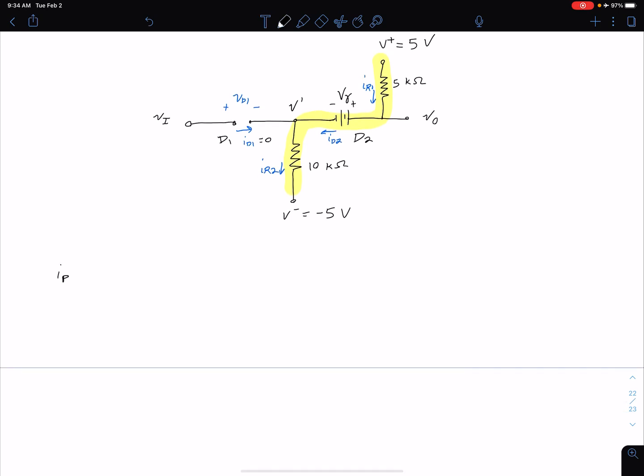So we can say I_R1 is equal to I_D2 is equal to I_R2. Okay and so what that's equal to is going to be from KVL and Ohm's law, V^+ minus V_gamma minus V^- divided by 10k plus 5k.